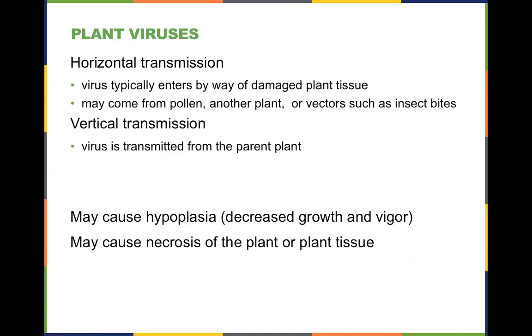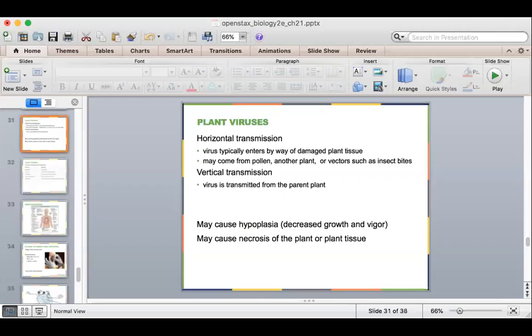For plant viruses, you actually have horizontal transmission and vertical transmission, where a virus is transmitted from the parent plant or can come from some other vector, such as an insect bite eating a leaf. The overall idea is that viruses create a bit of random genetic information introduced into a cell that can then drive how evolution occurs inside of those organisms.